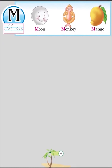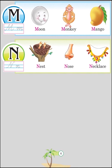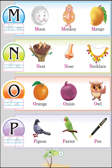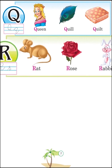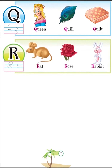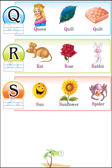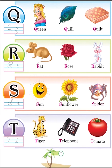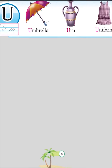M for Moon, M for Monkey, M for Mango, N for Nest, N for Nose, N for Necklace, O for Orange, O for Onion, O for Owl, P for Pigeon, P for Parrot, P for Pen, Q for Queen, Q for Quill, Q for Quilt, R for Rat, R for Rose, R for Rabbit.